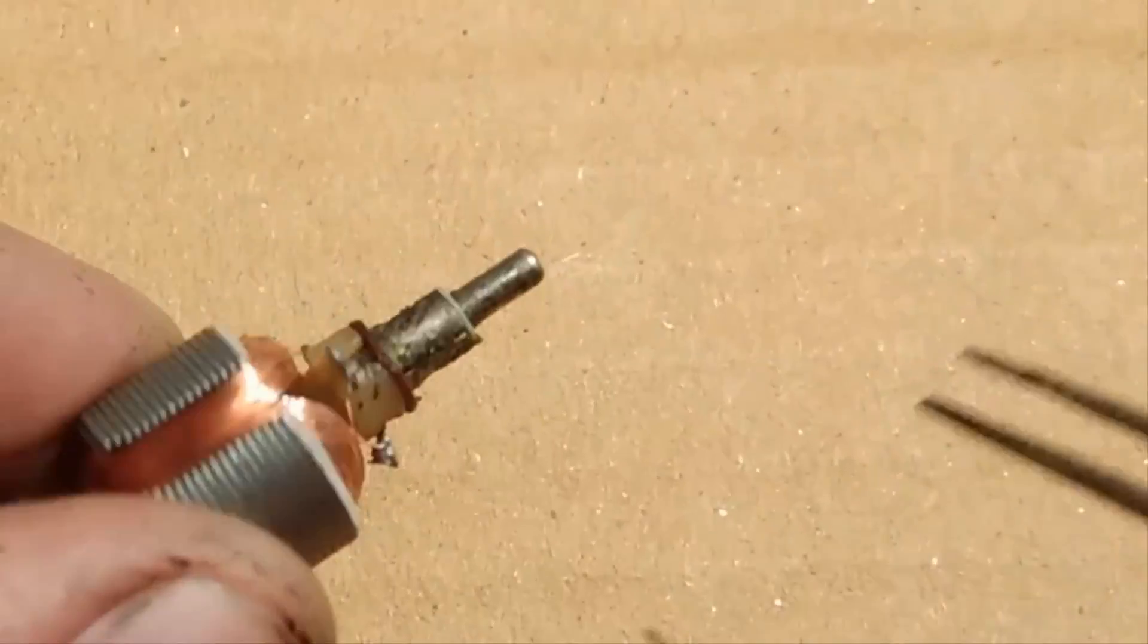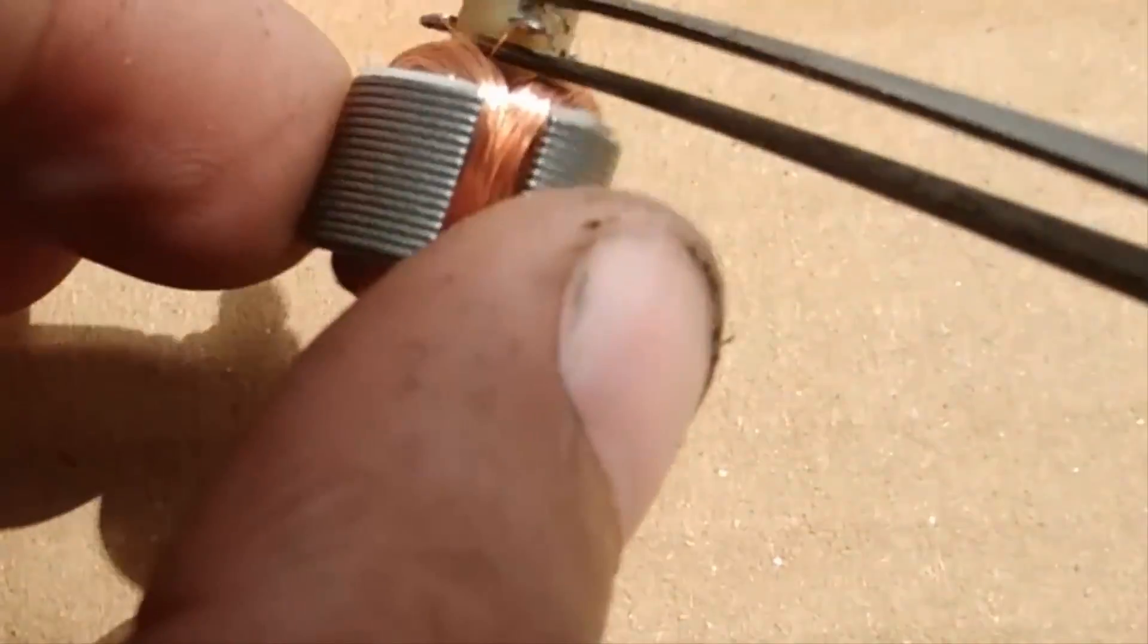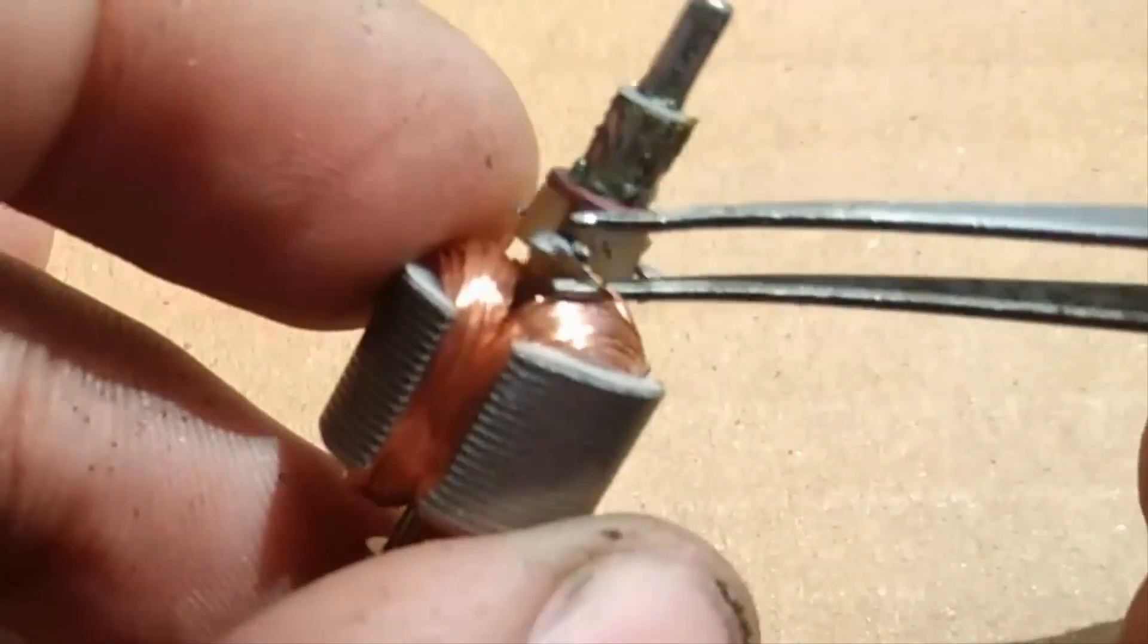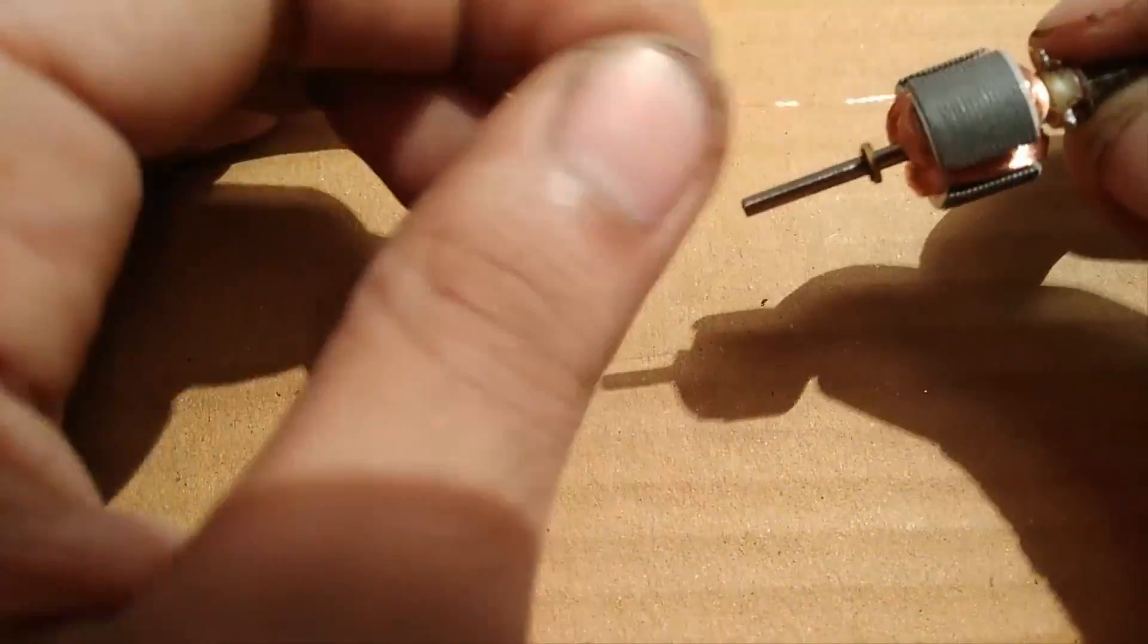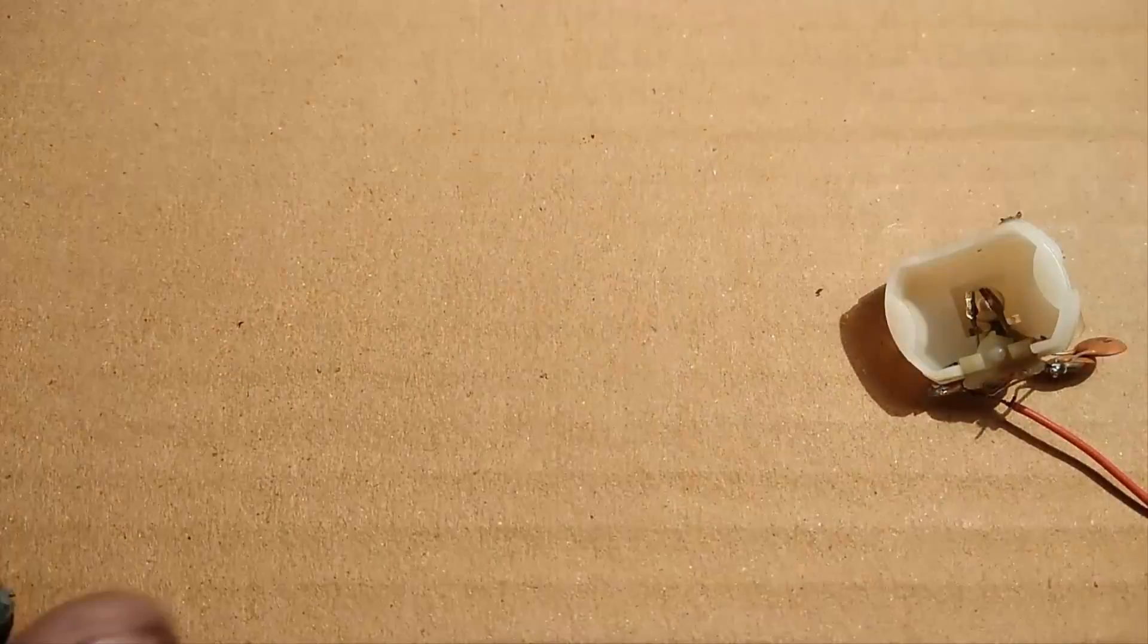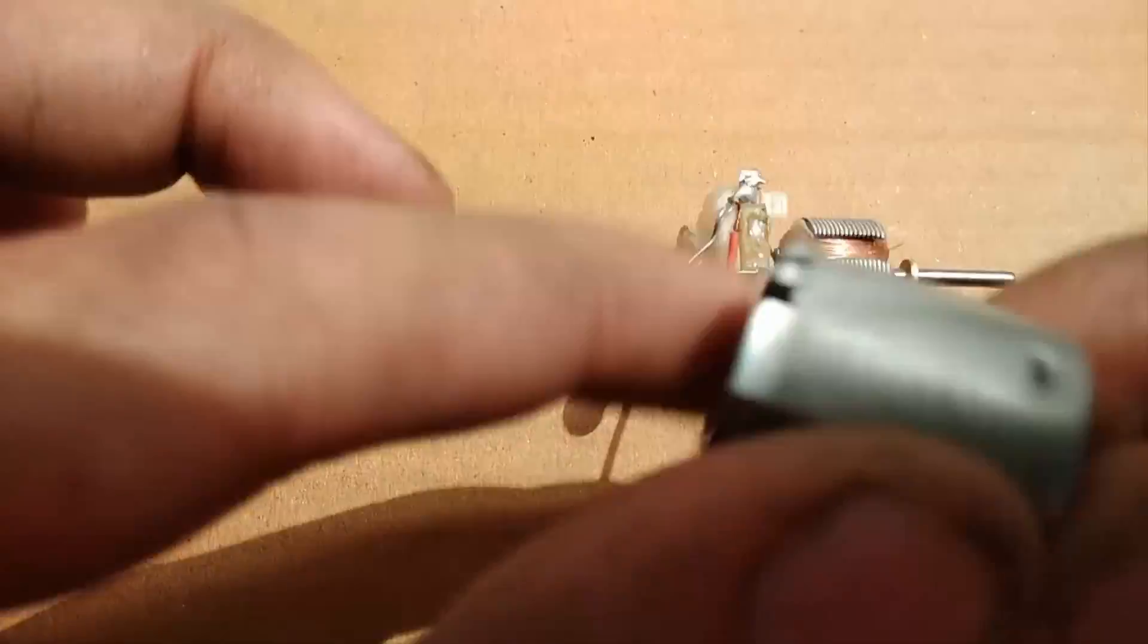Now the armature of this type of DC motor usually has 3 bolts and the windings from the bolts are connected to the commutator. So what I am going to do is deactivate one of the 3 bolts by breaking any one of the wires connected to the commutator. This process removes the ability of the DC motor to self start, which means to start it you will have to give it a push with your fingers.